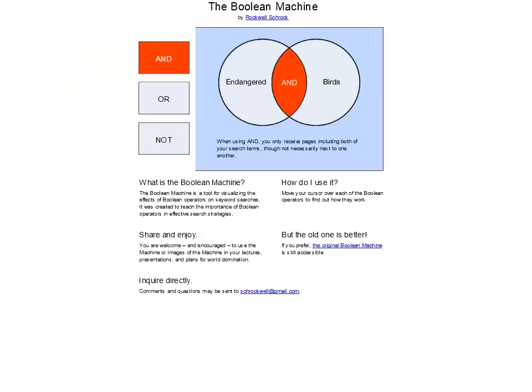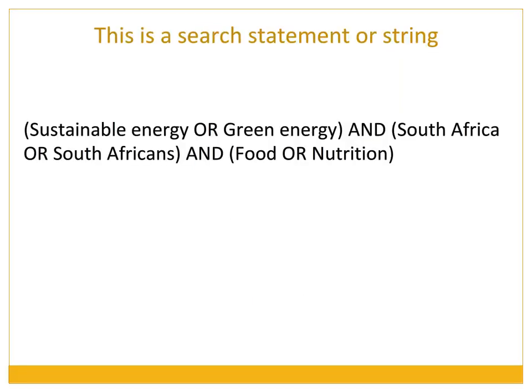By using the AND Boolean operator, you limit your search result, and by using the OR Boolean operator, you broaden your search result. A search string is a combination of keywords, truncation symbols, and Boolean operators you enter into a search box.